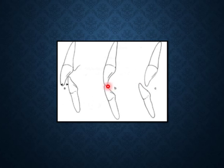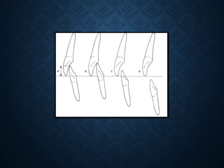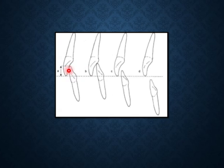Edge-to-edge means the upper incisal edge occludes with the lower incisal edge. Here is the normal overjet, here the reverse overjet, and here is edge-to-edge. Normal overjet is the normal anteroposterior horizontal relation. The overbite is the vertical distance between the upper incisal edge and the lower incisal edge — if the distance is vertical, it is overbite; if it is in the anteroposterior relation, it is overjet.